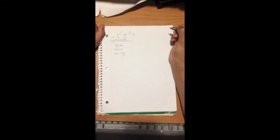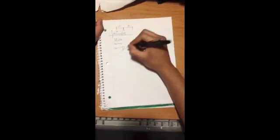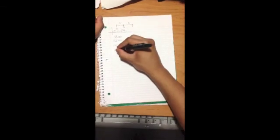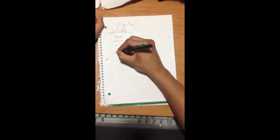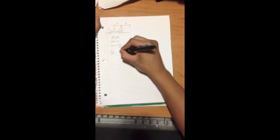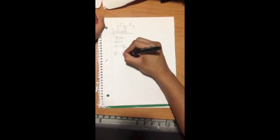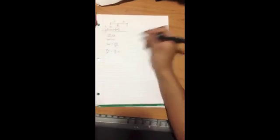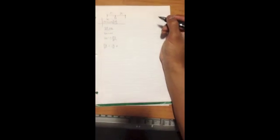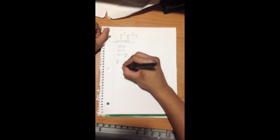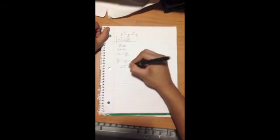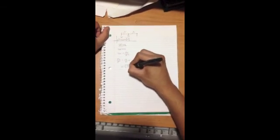Solving for this, we have negative k over m times x equals acceleration, which by analogy will lead to omega equals square root of k over m.